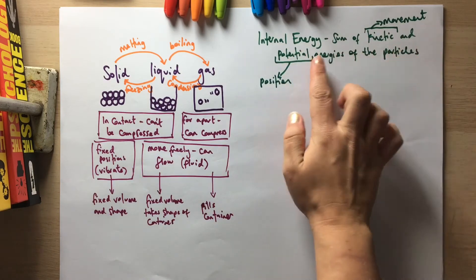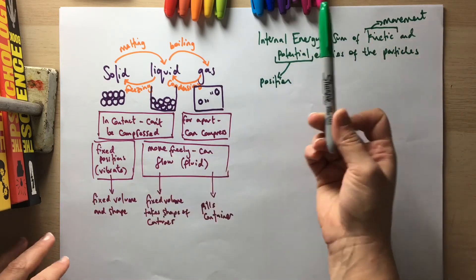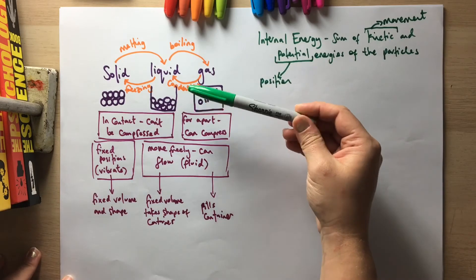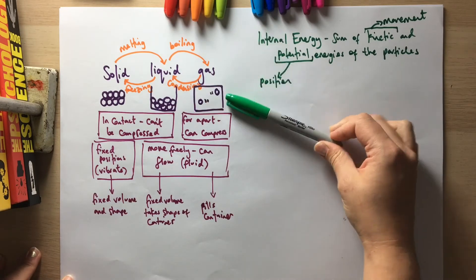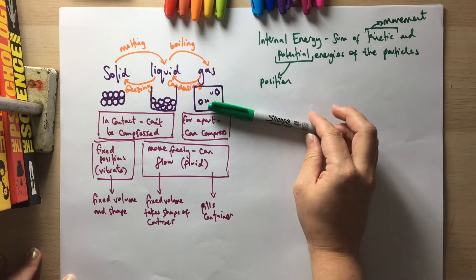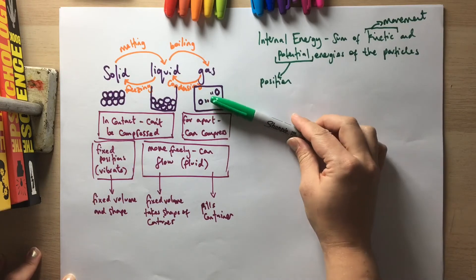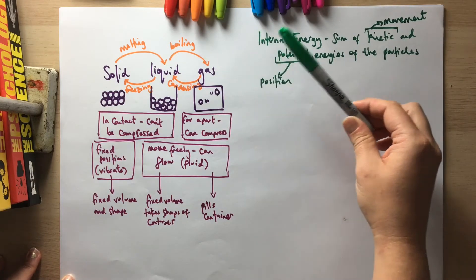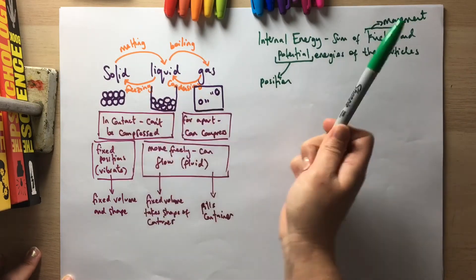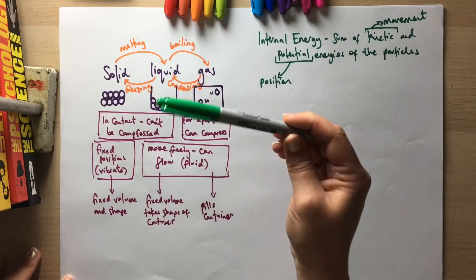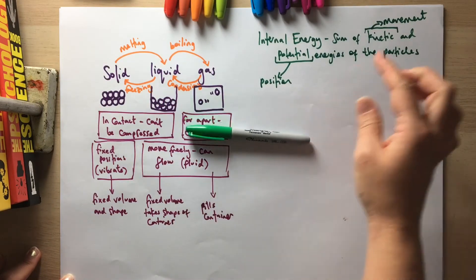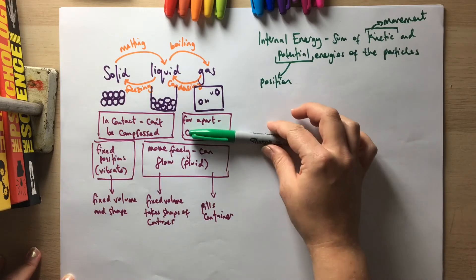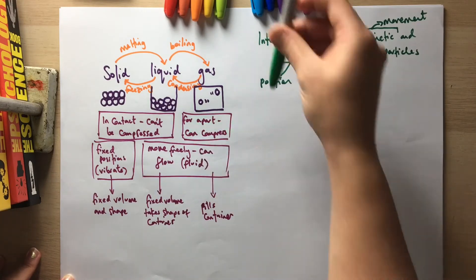It is about the energies of the particles. If I change the temperature of this pen, the particles are going to move more — that's their kinetic energy. If I move the pen around, I'm giving the pen kinetic energy, but I'm not giving the particles kinetic energy. It is only when we're talking on a particle level.